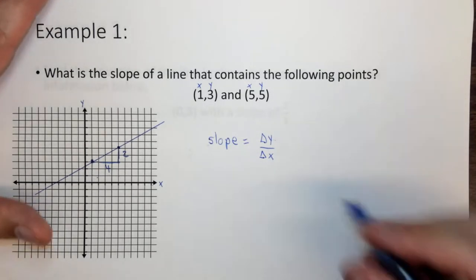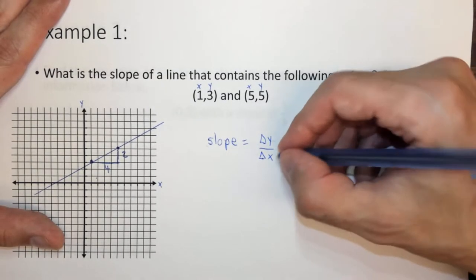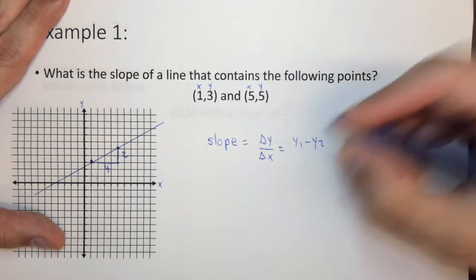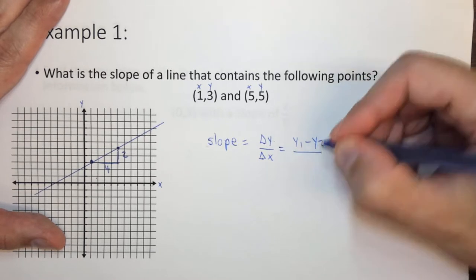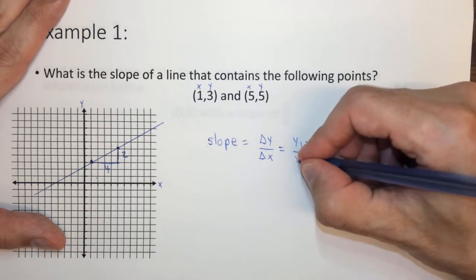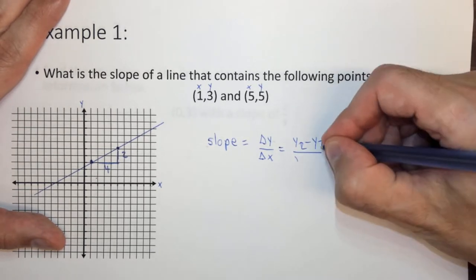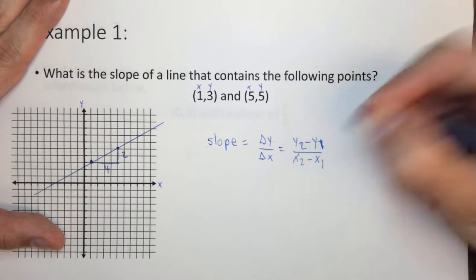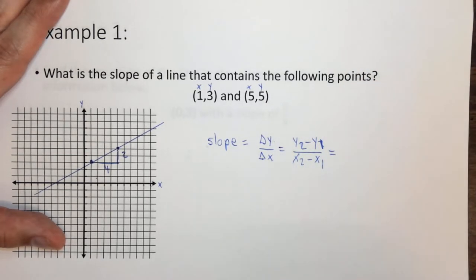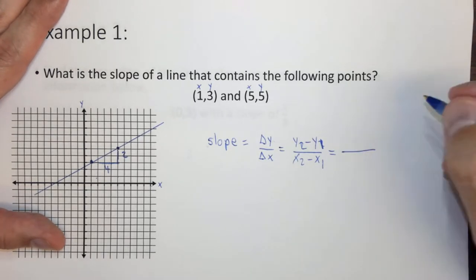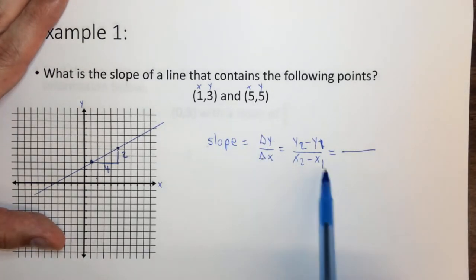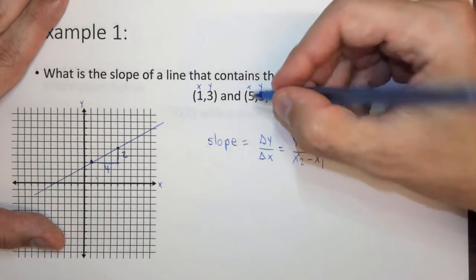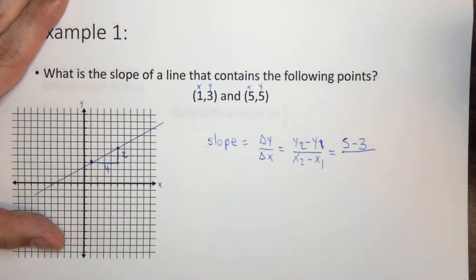But the other way you can think of the change in y is y1 minus y2. And here usually it's this way, y2 minus y1, and here x2 minus x1. It doesn't really matter, you can subtract them either way, but I'm going to do it this way. So in this case, y2 is five minus y1, which is three, which equals two.